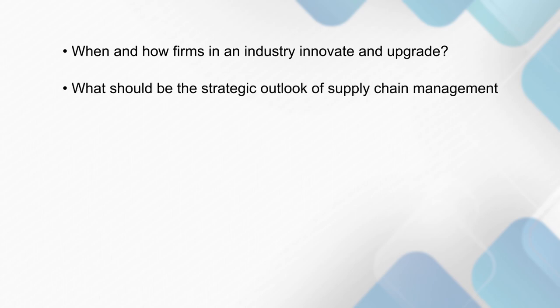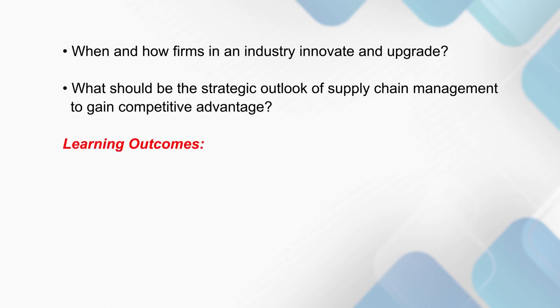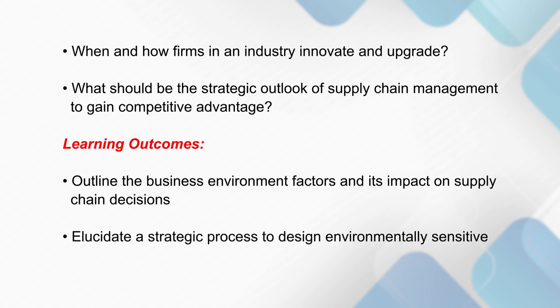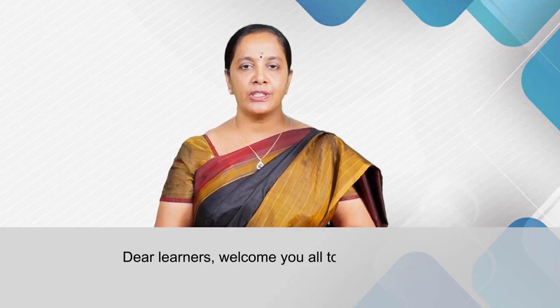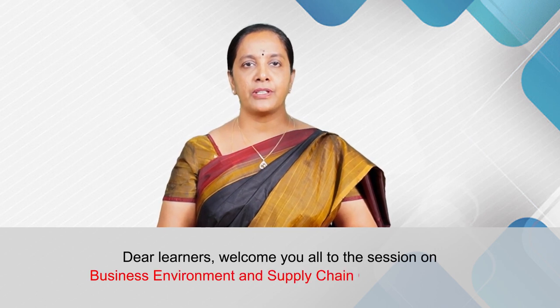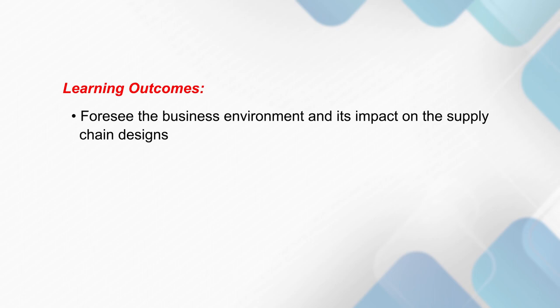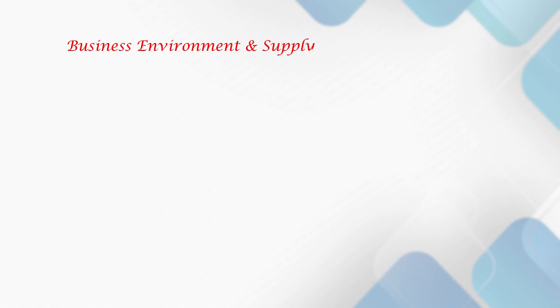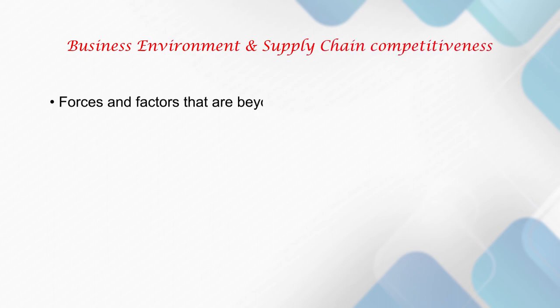The learning objectives are to outline the business environment factors and their impact on supply chain decisions, and to elucidate a strategic process to design environmentally sensitive supply chains. By the end of this session, you can foresee the business environment and its impact on supply chain decisions, and incorporate changes in the business environment into competitive supply chain designs and management.